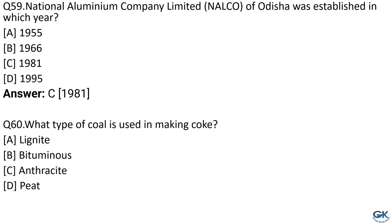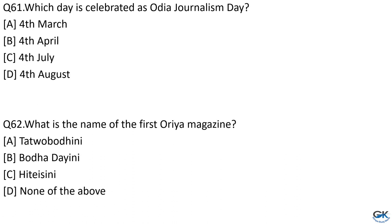Question No. 60: What type of coal is used in making coke? Option A: Lignite. Option B: Bituminous. Option C: Anthracite. Option D: Peat. The answer is Option B, Bituminous. Question No. 61: Which day is celebrated as Odia Journalism Day? Option A: 4th March. Option B: 4th April. Option C: 4th July. Option D: 4th August. The answer is Option D, 4th August.